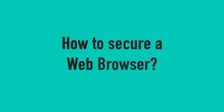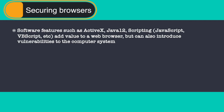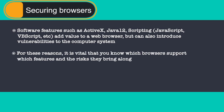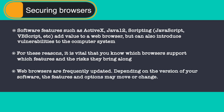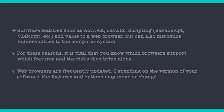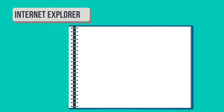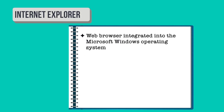Let us now discuss how to secure each web browser step by step. Software features such as ActiveX, Java, JavaScript, and VBScript add value to a web browser but can also introduce vulnerabilities due to poor implementation, poor design, or bad configuration. It is vital that we know which browser supports which features and the risks they bring. Microsoft Internet Explorer is a web browser integrated on the Windows platform and it is not practical to remove it. In addition to supporting Java, scripting, and other active content, Internet Explorer implements ActiveX technology.